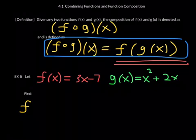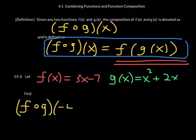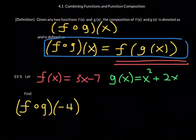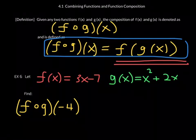Find f composed with g at negative 4. Now, f composed with g is a composite function, and they're basically asking you to find the value of that composite function when you plug in negative 4. So f composed with g at negative 4 is what you have to figure out. They gave you the input of negative 4 — you find the output, or as we like to call it, the function value.